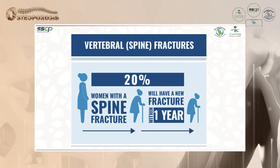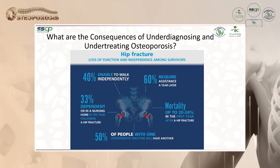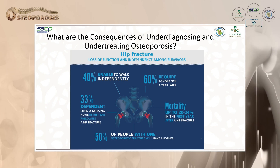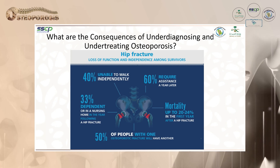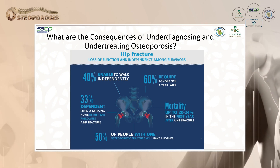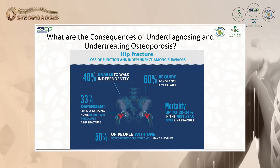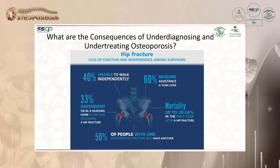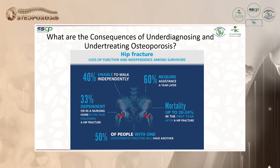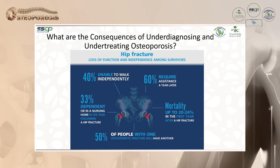Regarding vertebral fractures, 20% of women with a spine fracture will have another fracture within one year. The consequences of underdiagnosed and undertreated osteoporosis include fracture, loss of function and independence, and compromised quality of life. We find 40% unable to walk independently, 60% requiring assistance a year later, 33% residing in a nursing home, and mortality of 20–24% in the first year after hip fracture. 50% of people with one osteoporotic fracture will have another.